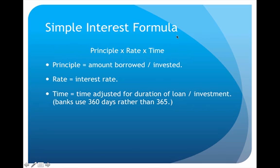The simple interest formula is principal times rate times time. Principal is the amount of money either being borrowed or invested. Rate is the interest rate, and time is a time adjustment for the length of time — for example, a certain number of days. We use bankers interest, which is based on 360 rather than 365, so unless told otherwise we always assume bankers interest.